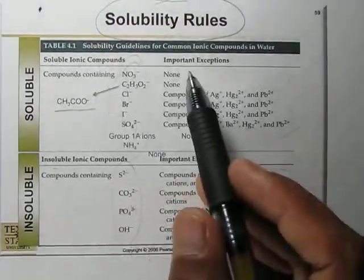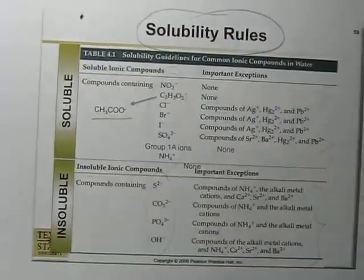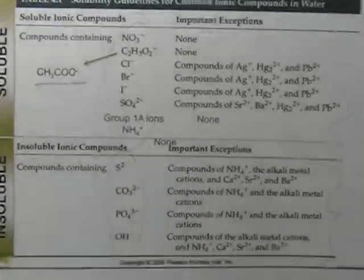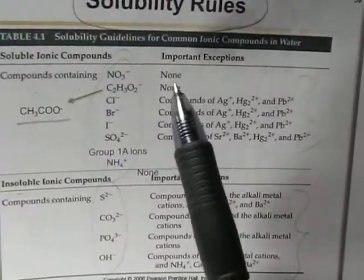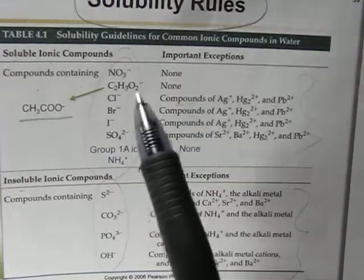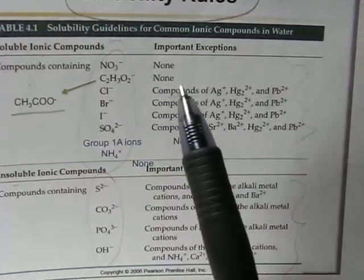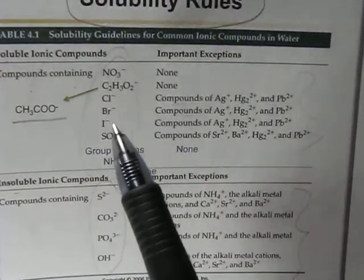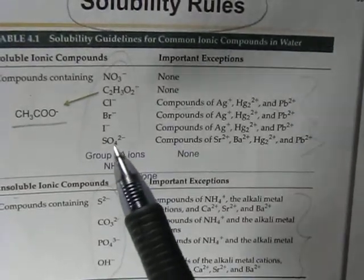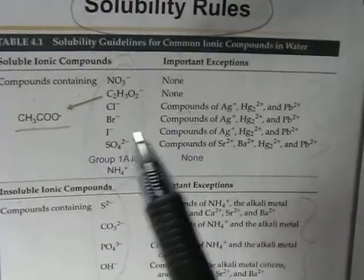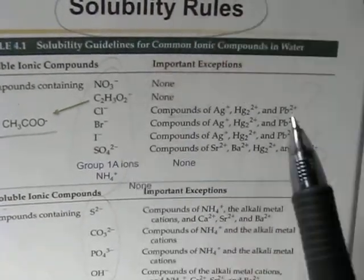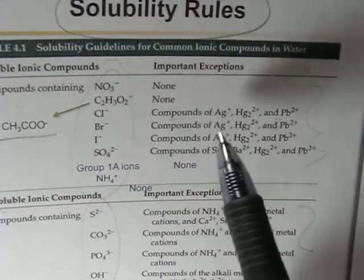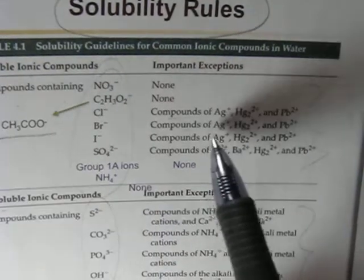For soluble ionic compounds: all nitrates are soluble with no exceptions; all acetates are soluble with no exceptions. Chloride, bromide, and iodide are generally soluble, but exceptions include silver chloride, mercury chloride, and lead chloride — these are insoluble.